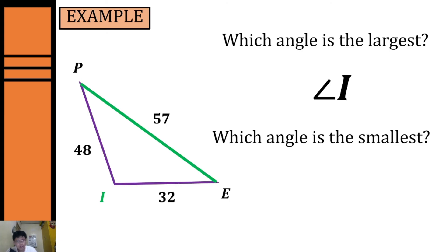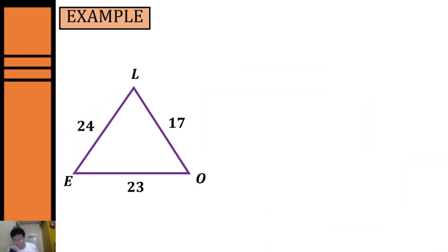Now let's look for the smallest angle. In identifying the smallest angle we have to determine our shortest side. Our shortest side is side IE. Using the Side Angle Inequality Theorem, the angle opposite the shortest side is the smallest angle, so our smallest angle will be angle P.